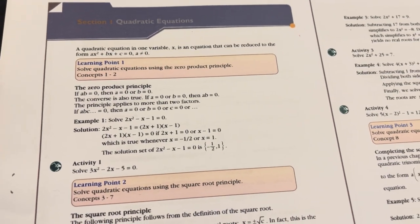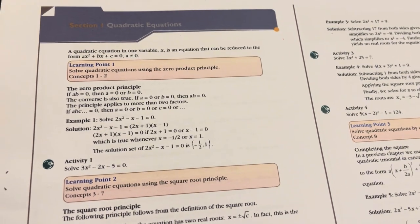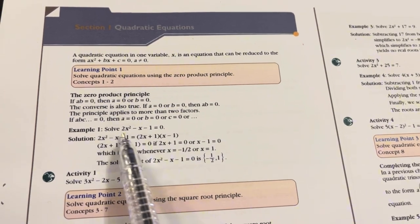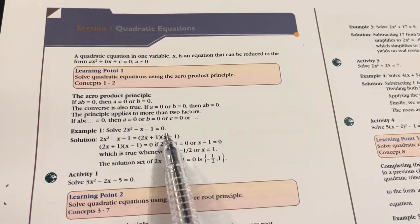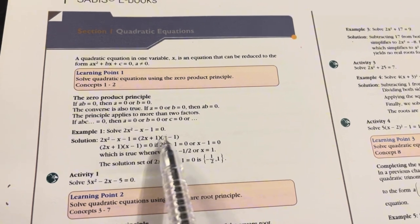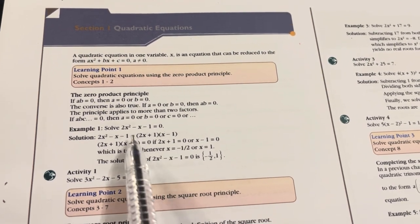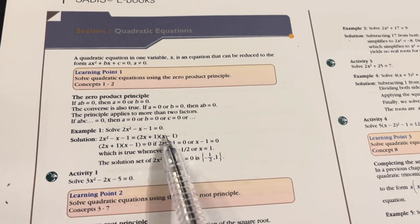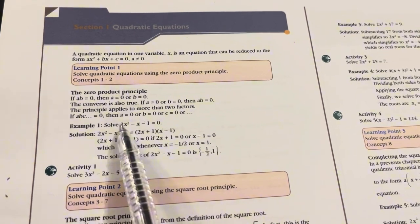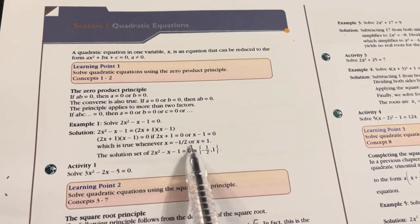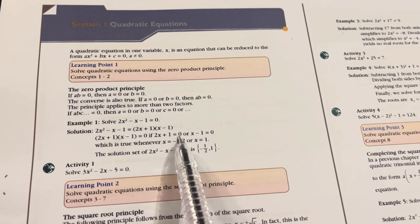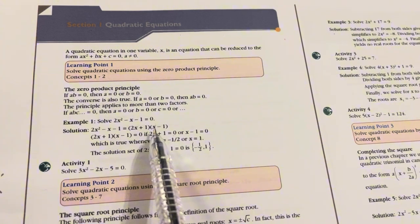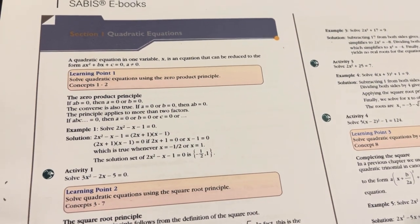Algebra section 3.1 is talking about quadratic equations and how to find the roots. For example, when we have a quadratic equation we can factor it into two brackets: (2x + 1)(x - 1). So either 2x + 1 = 0, giving x = -1/2, or x - 1 = 0, giving x = 1.